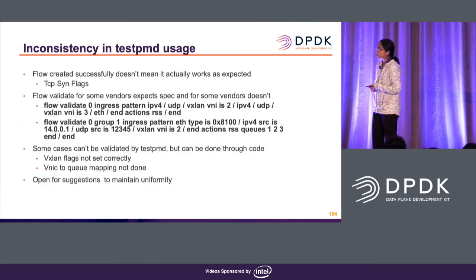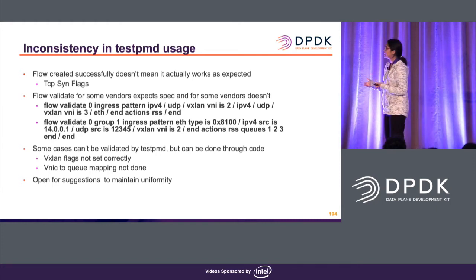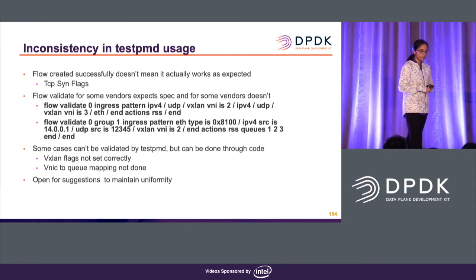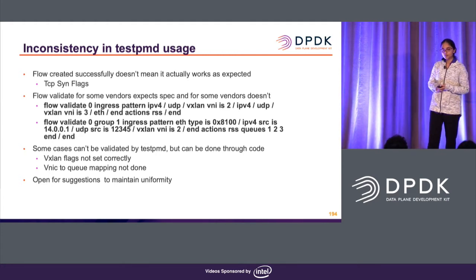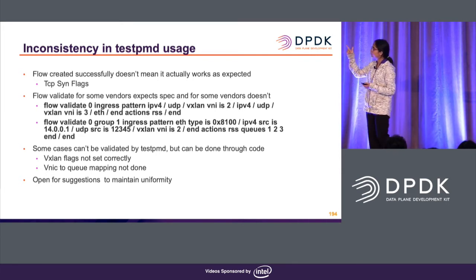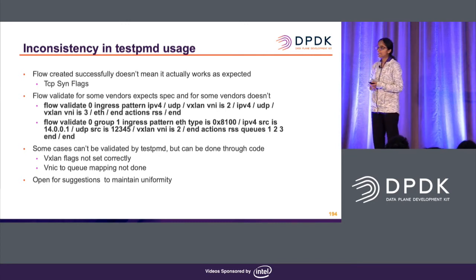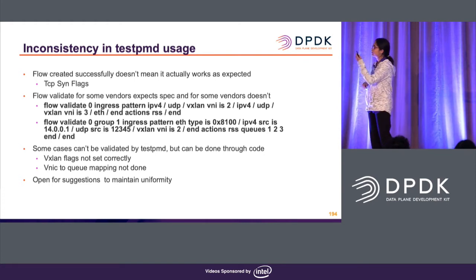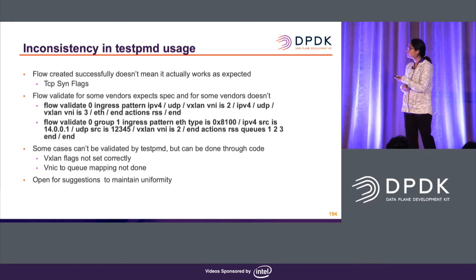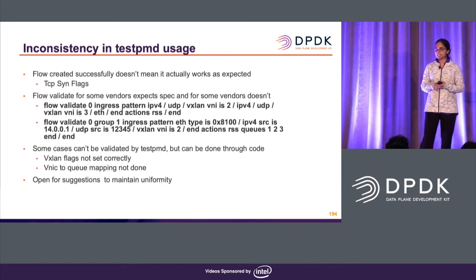While using TestPMD, we saw a few inconsistencies. There were cases where a flow gets created but doesn't actually work as expected. For instance, with TCP syn flags, the flow got created, but packets with the SYN-ACK flag didn't go to the expected queue ID. Also, when trying flow validate across different vendors, we noticed that some vendors don't require you to mention spec for each pattern, while other vendors do require it. Such cases cause confusion among users about what the proper TestPMD command is.